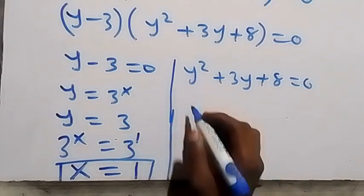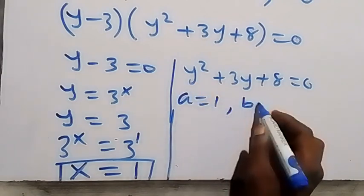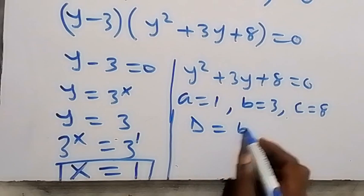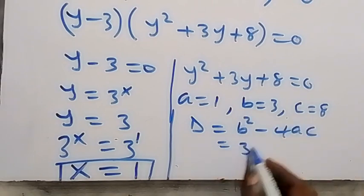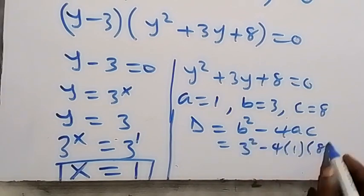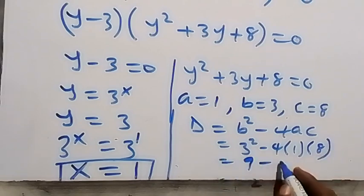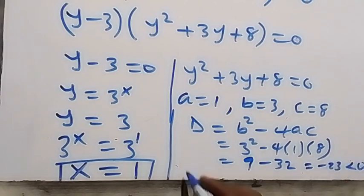Now let's check the second case. With a equals 1, b equals 3, and c equals 8, using the discriminant b squared minus 4ac: that's 3 squared minus 4 times 1 times 8, giving 9 minus 32, which equals negative 23. Since this is less than zero, there is no real solution here.